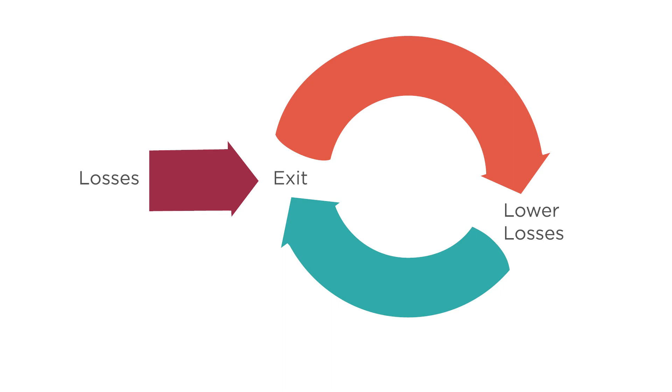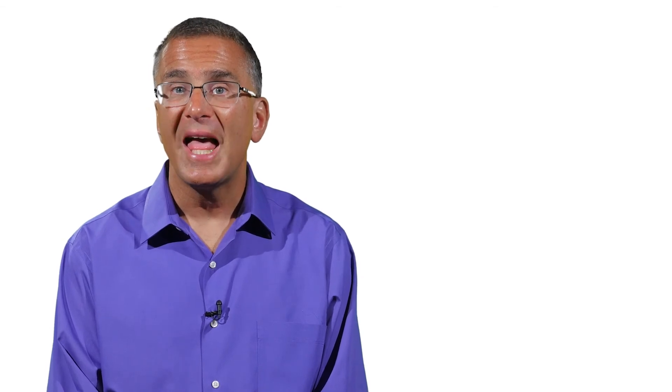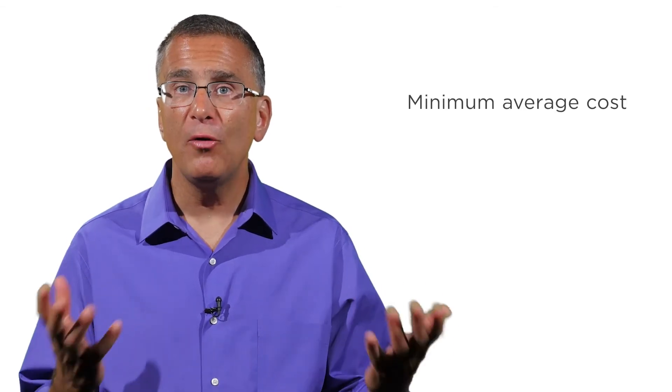Where does the cycle stop? It stops when the remaining firms are no longer experiencing losses. If there are ever any losses, more firms will exit until profits are zero. And when these profits get to zero, whether through firms entering or exiting the market, we know that all the remaining firms will be producing their goods at the minimum average cost. How do we know this?